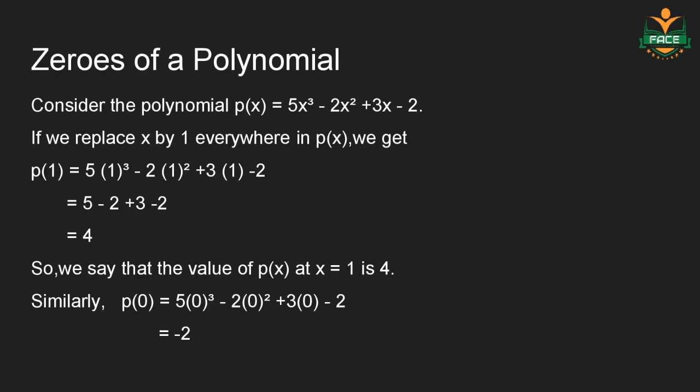Next, zeros of a polynomial. Consider the polynomial P(x) is equal to 5x cubed minus 2x squared plus 3x minus 2. If we replace x by 1 everywhere in P(x), we get P(1) is equal to 5 into 1 cubed minus 2 into 1 squared plus 3 into 1 minus 2. The answer is 4. Therefore, P(1) is 4, so the value of P(x) at x equal to 1 is 4.